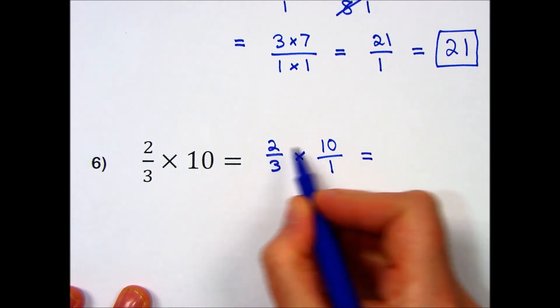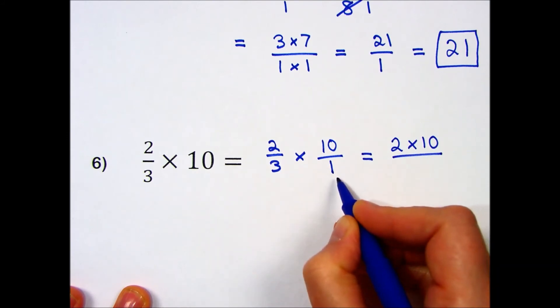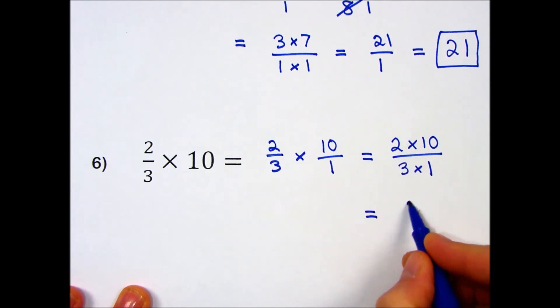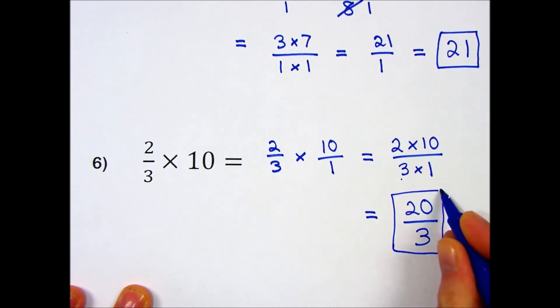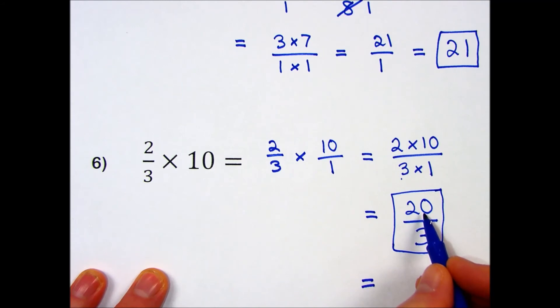Writing top times top, 2 times 10; bottom times bottom, 3 times 1. Do the multiplication: 2 times 10 is 20, 3 times 1 is 3. That's my final answer in an improper format. If you would like to answer back as a mixed number, you would say 3 goes into 20 at most 6 times.